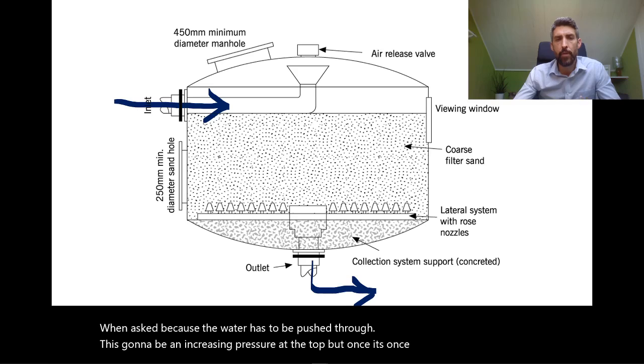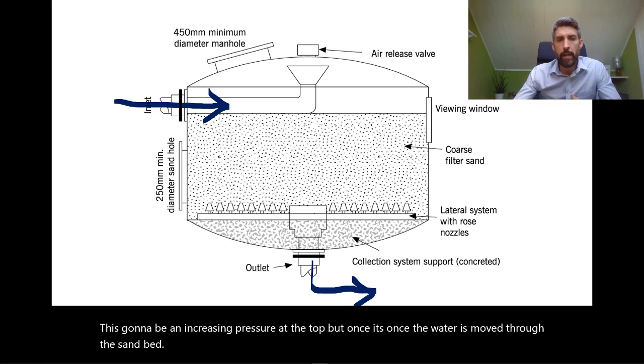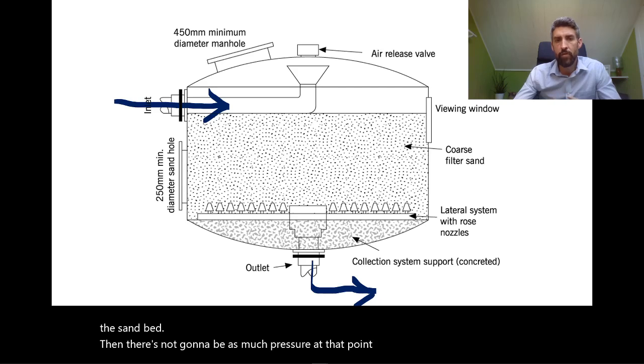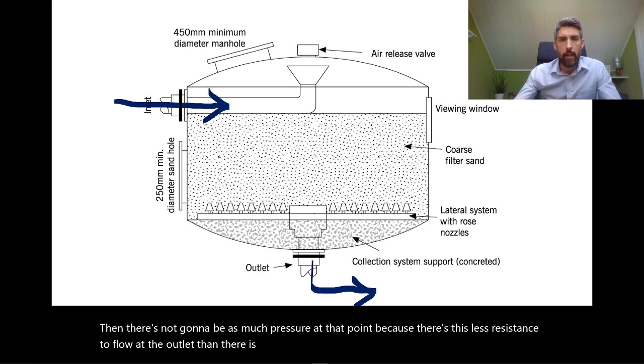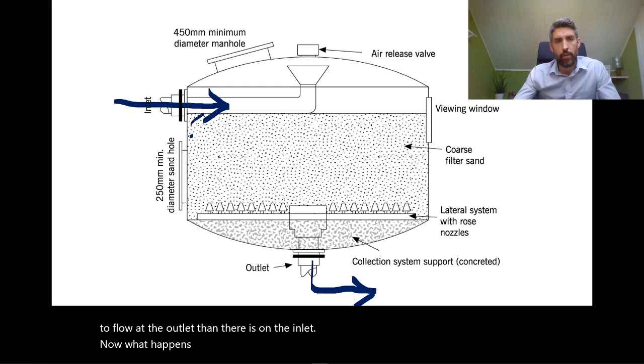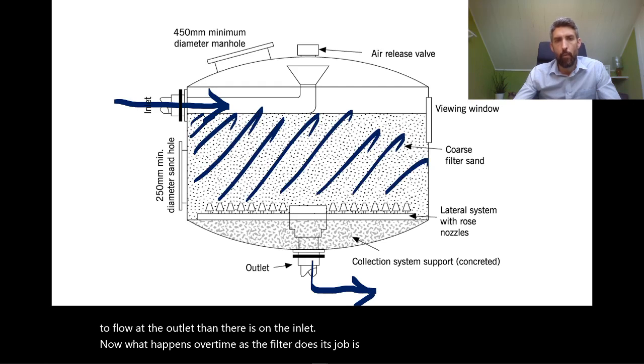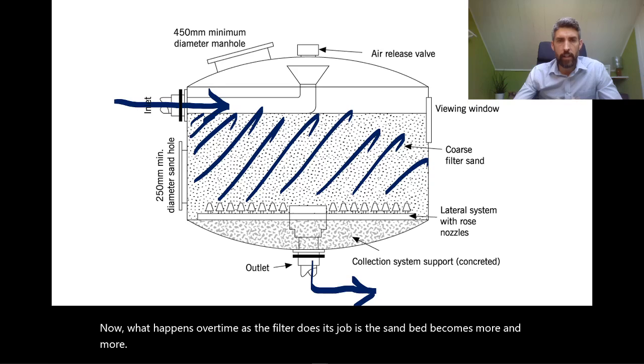Once the water has moved through the sand bed, there's not going to be as much pressure at that point because there's less resistance to flow at the outlet than there is on the inlet. Now what happens over time as the filter does its job is the sand bed becomes more and more saturated with pollution from the swimming pool.